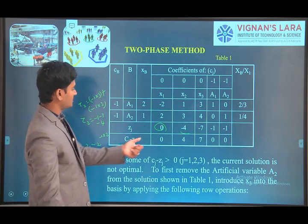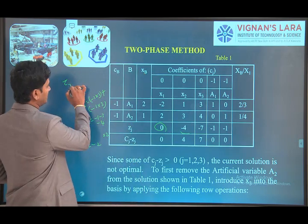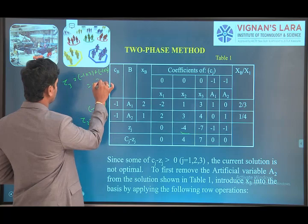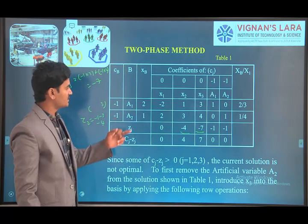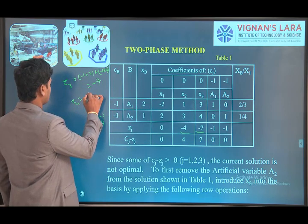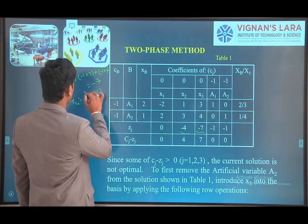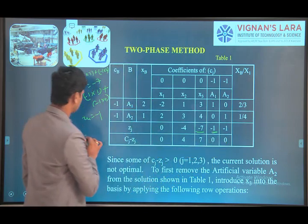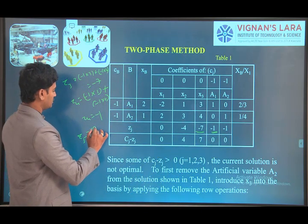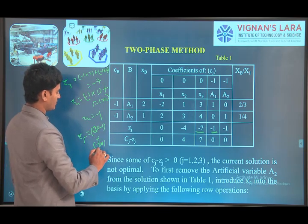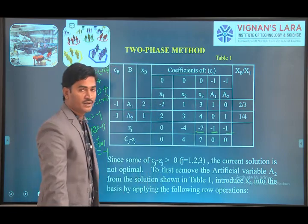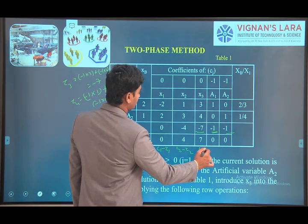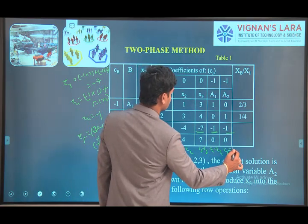Continuing the zj calculations: z4 = (−1)(1) + (−1)(0) = −1. z5 = (−1)(0) + (−1)(1) = −1. Now computing cj − zj: c1 − z1 = 0 − 0 = 0; c2 − z2 = 0 − (−4) = 4; c3 − z3 = 0 − (−7) = 7; c4 − z4 = −1 − (−1) = 0; c5 − z5 = −1 − (−1) = 0.